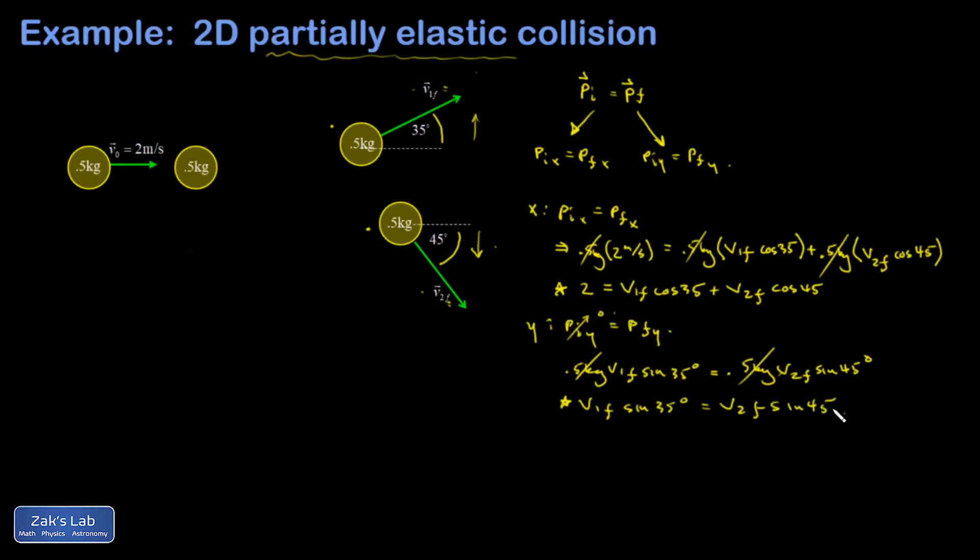So now we've got a fairly simple system of two equations and two unknowns. I'm going to go ahead and solve it with substitution by taking my second equation here and just switching to decimal approximations and I'll just solve for V1 final. So V1 final has to be V2 final times sine 45 over sine 35. I get the V1 final is approximately 1.233 times V2 final.